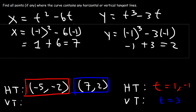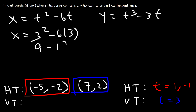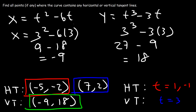The last thing we need to do is find the location of the vertical tangent line when t is 3. x is 3 squared minus 6 times 3, which is 9 minus 18, giving negative 9. For y, 3 to the third is 27, and 3 times 3 is 9, so 27 minus 9 is 18. So at the point (−9, 18) we have a vertical tangent line. That's how you identify the locations of horizontal and vertical tangent lines on a parametric curve.